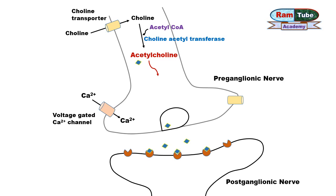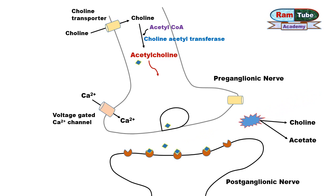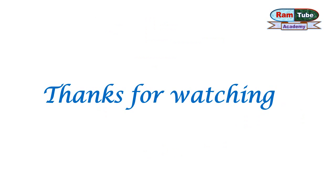Once acetylcholine is released into the synapse, it either binds with receptors on the postganglionic nerve or organs to show its effect, or it is metabolized by acetylcholinesterase into choline and acetate. The newly formed choline is taken back into the preganglionic nerve through choline transporters, where it is used to synthesize another molecule of acetylcholine.